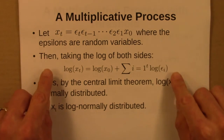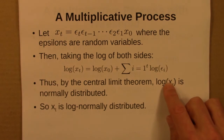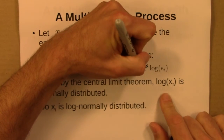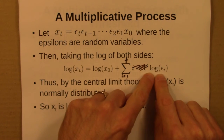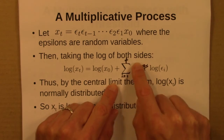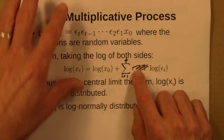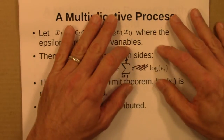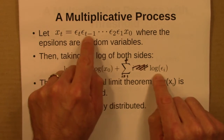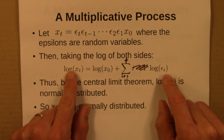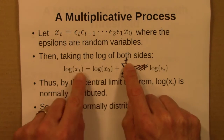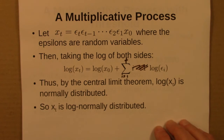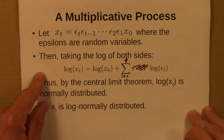If we take the logarithm of both sides and use log properties, we get the sum of log epsilon_i from i equals 1 to t. That sum is a sum of random variables, and since epsilons are random, log epsilons are random too. By the central limit theorem, the sum of random variables is normally distributed. So as t gets large, log of x_t will be normally distributed, which means x_t is log-normally distributed. This is a very easy way to generate a log-normally distributed variable.